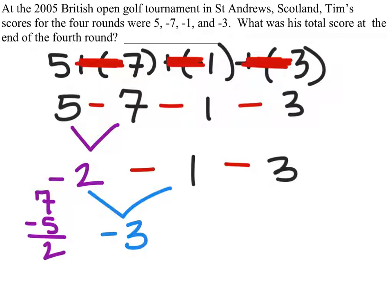From here we have this, negative 3 minus 3. And so we're just going to complete this, negative 3 minus 3. So if you now owe $3 and you borrow another $3, you now owe $6. And that right there is our final answer. What was his total score after the fourth round? Negative 6.